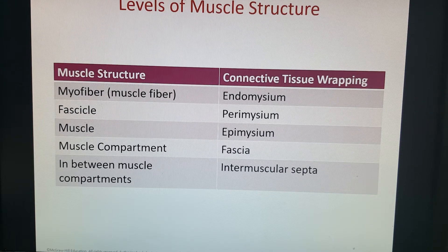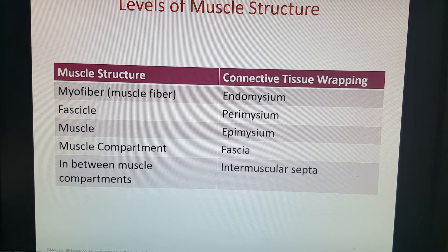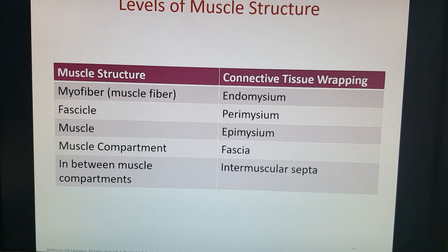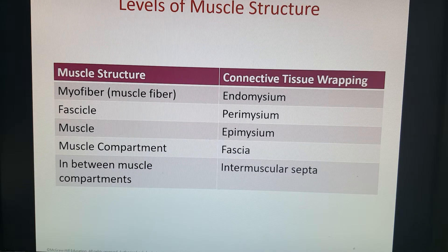We take a couple of those cells and bundle them up to form a fascicle. A fascicle is wrapped in perimysium — like a little perimeter around the group of muscle cells. Around an entire muscle, we have the epimysium. Think of 'epi' as something that is very large or big. That is the connective tissue wrapping around the whole muscle.